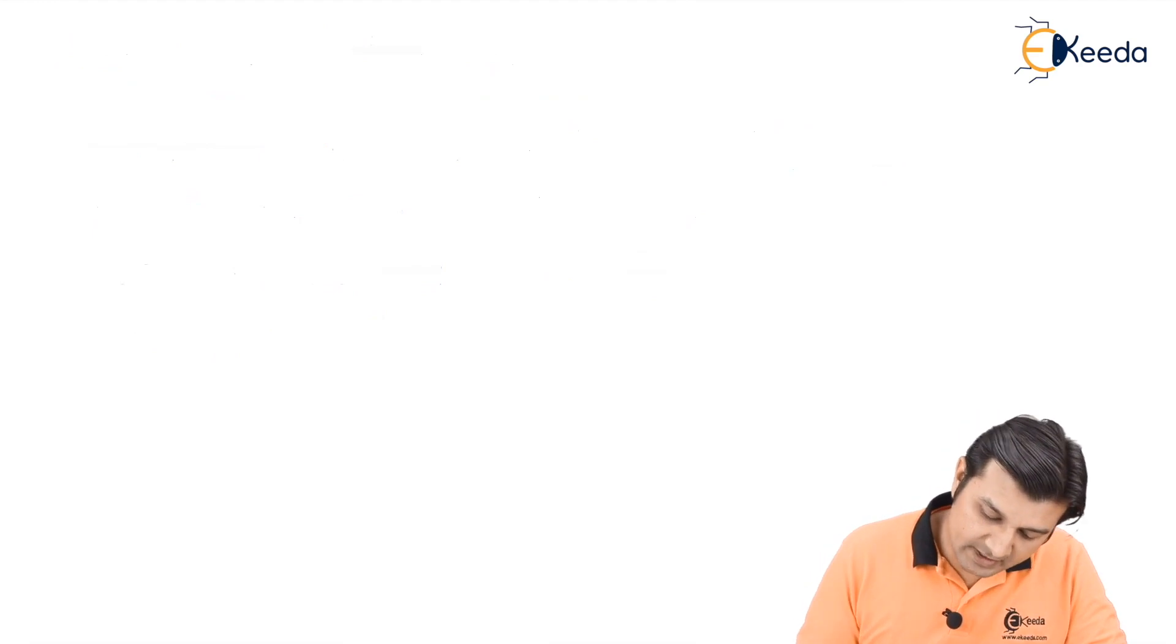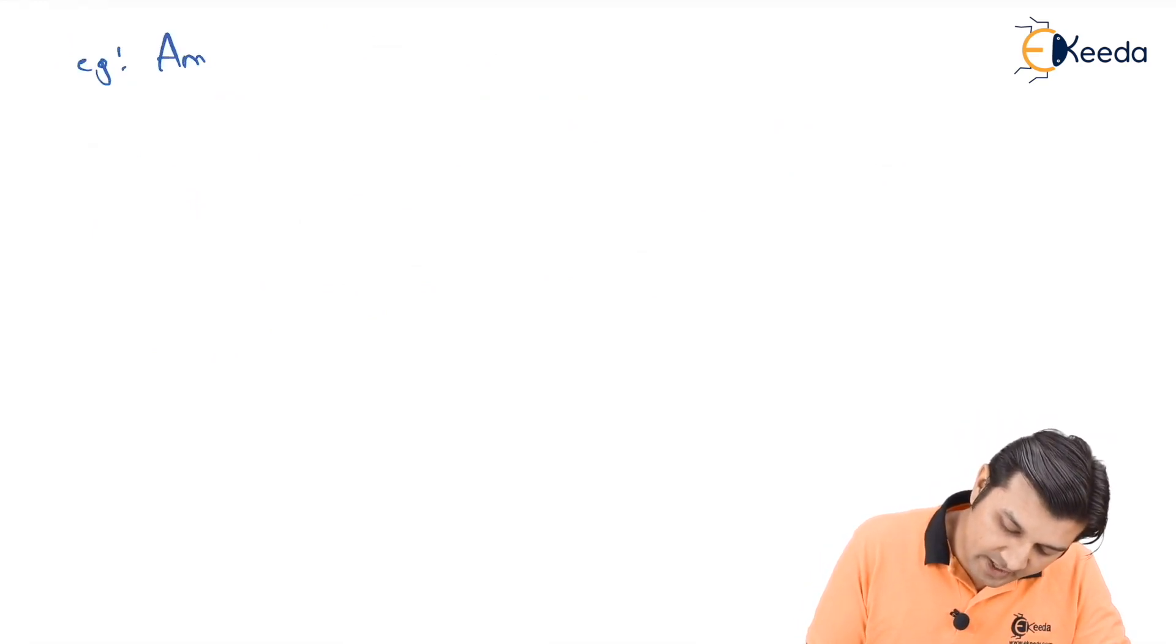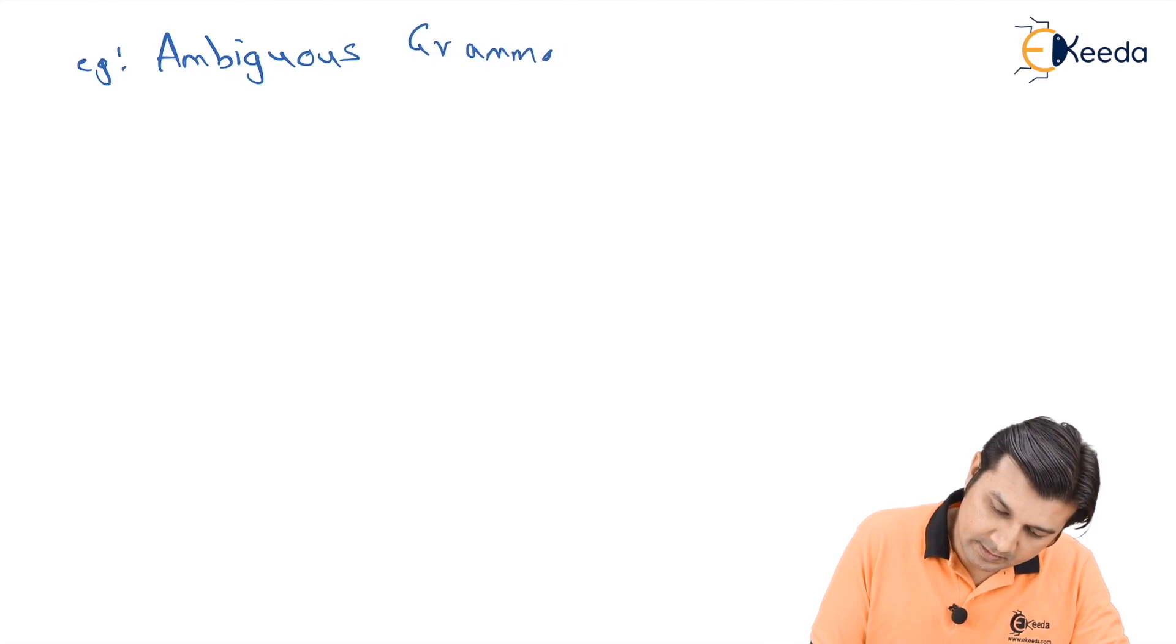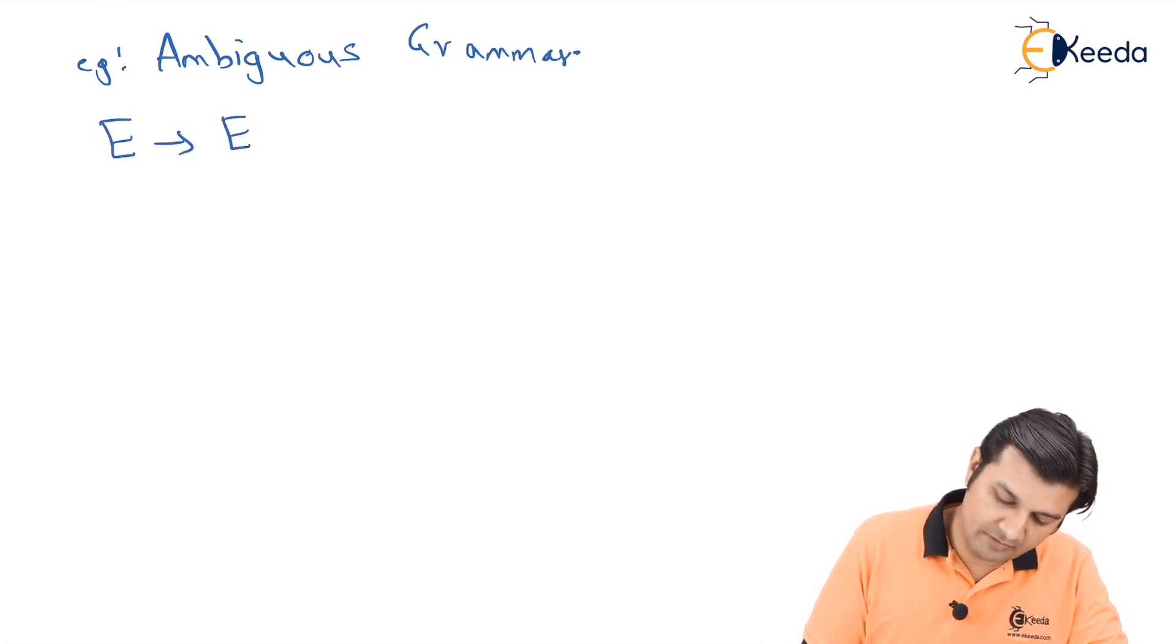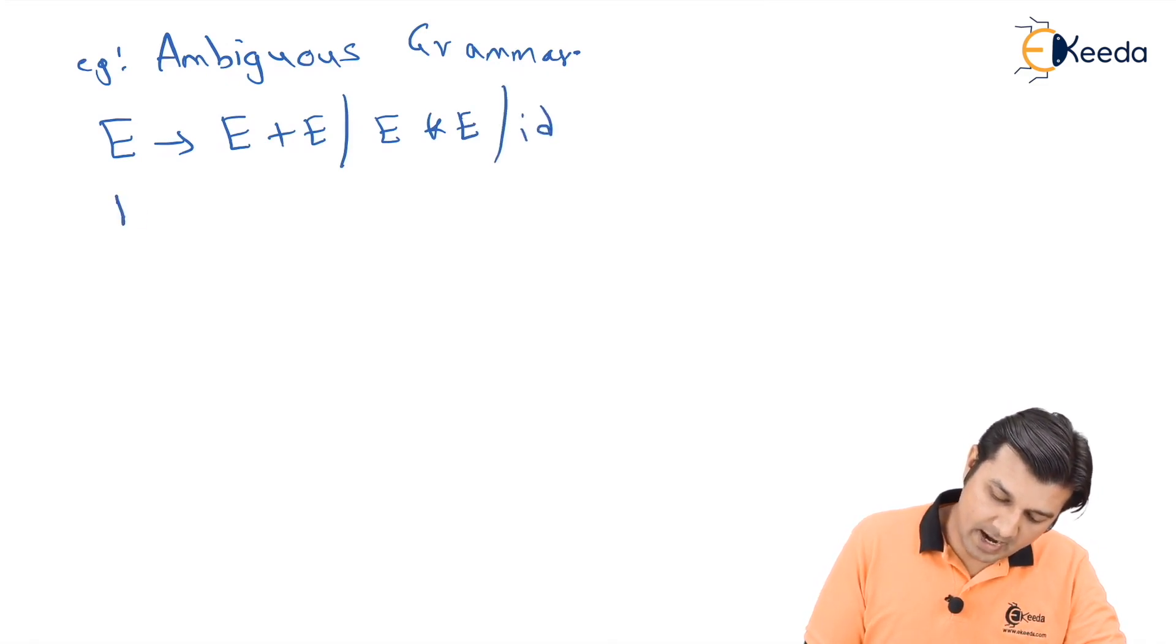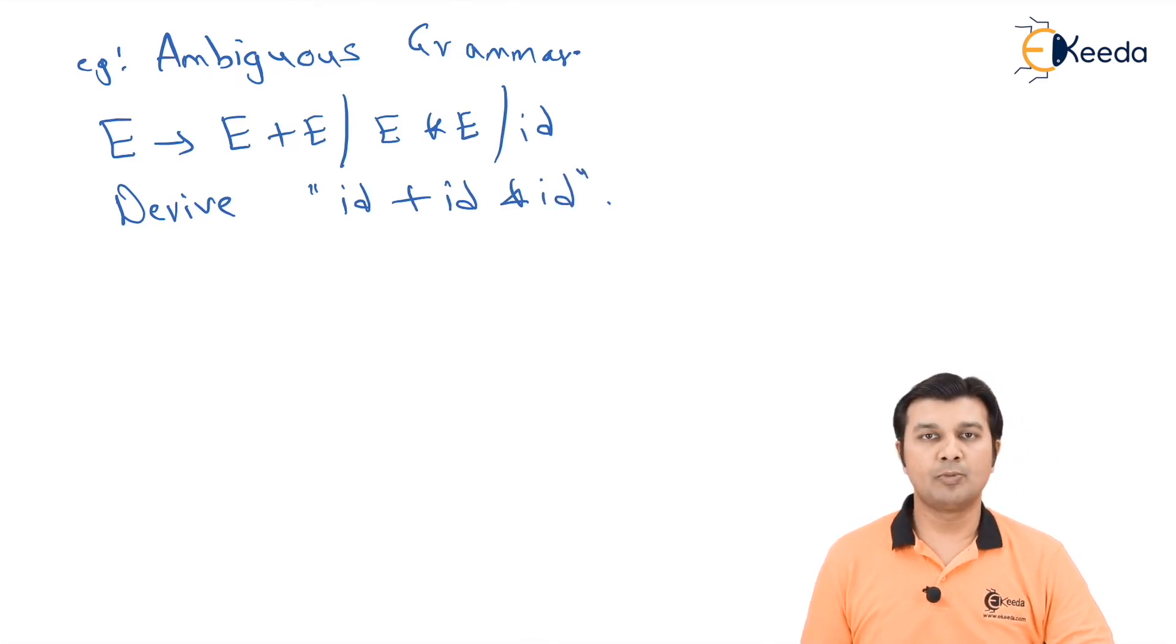Let me consider the first example where I am talking of ambiguous grammar. The question here is: we are given the grammar of the form E → E+E | E*E | id, and it is asking us to derive id + id * id using the above productions.